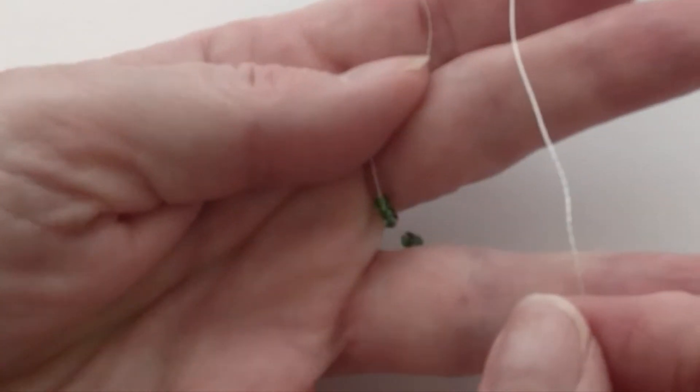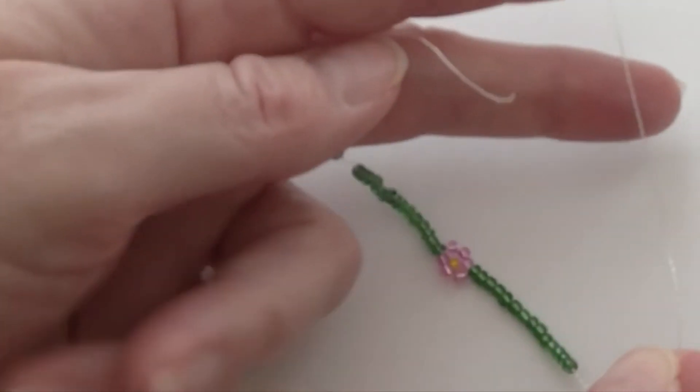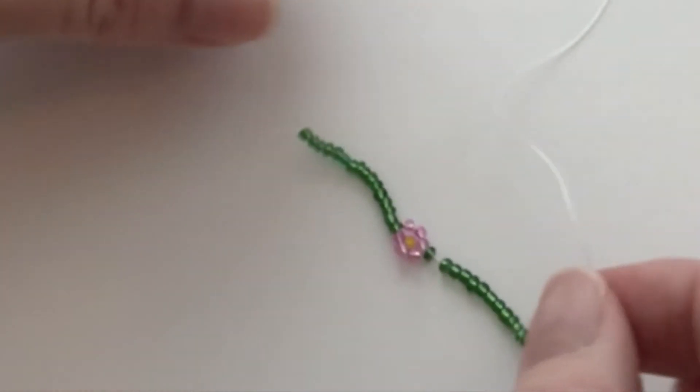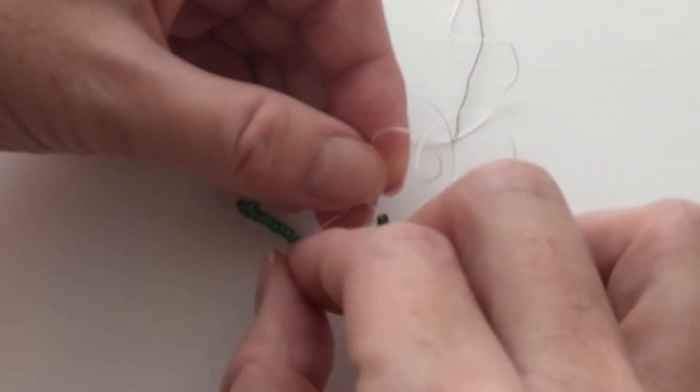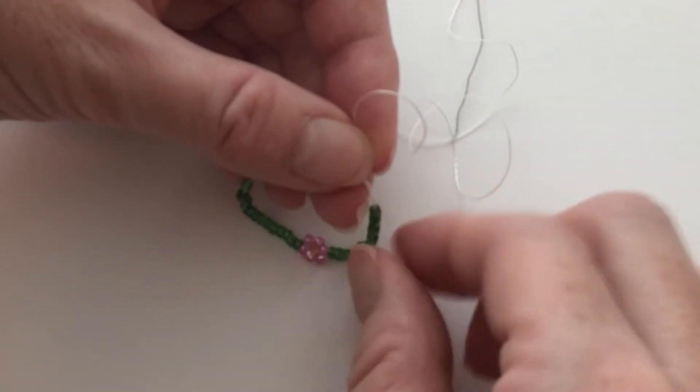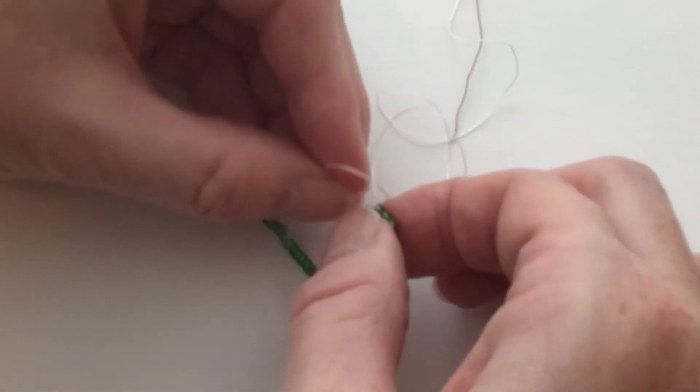It doesn't matter if you have to remove a few beads on one side or add a few on another side, because the knot isn't going to show. So it's okay if your knot is a little bit off center. Once you're happy with the number of beads, you're going to tie a strong knot.